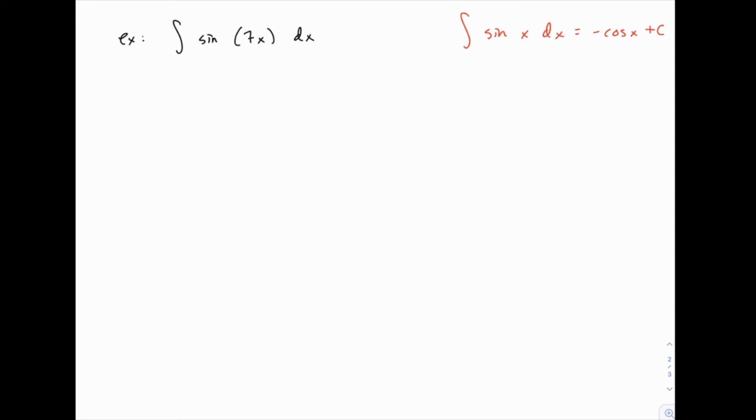Now of course thinking in terms of u-substitution, we're going to use the variable u instead of x. So we'll write something like the integral of sine of u du equals negative cosine of u plus c.